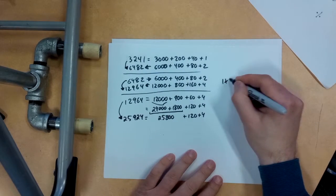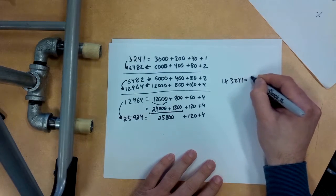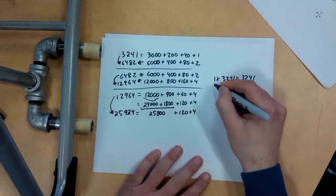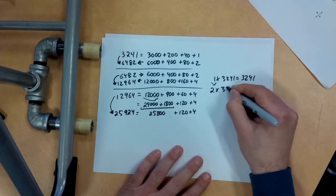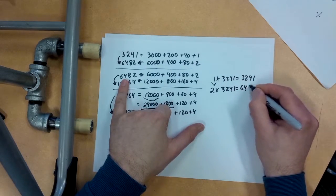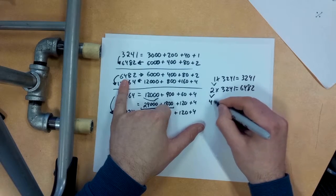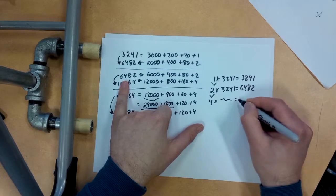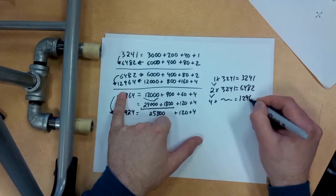In other words, 1 times 3,241 equals 3,241. If I double that, 2 times 3,241 equals 6,482. If I double that again, 4 times 3,241 equals 12,964.